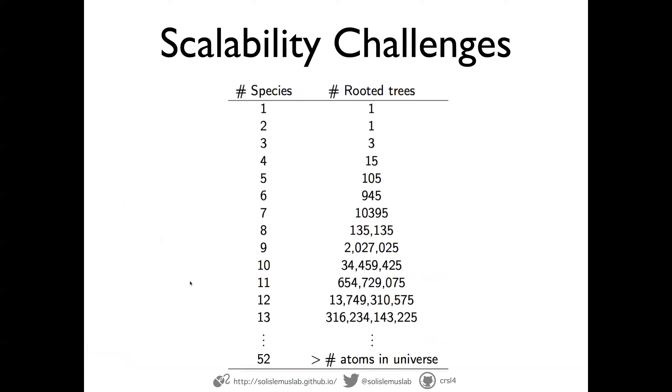That is not the case for every data set. For example, if we have 52 species in our sample, or in our data, there are more trees than atoms in the universe. So you can think we cannot evaluate the likelihood on each of them anymore. So we have to do different things.